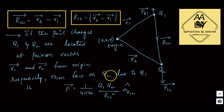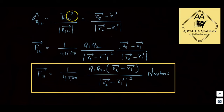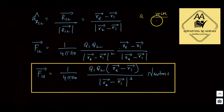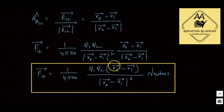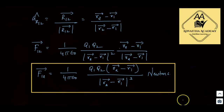So the force formula becomes: F12-bar = [1/(4πε₀)] · q1·q2 · (r2-bar − r1-bar) / |r2-bar − r1-bar|³, in newtons. This is the general formula for two-point charges. For n-point charges, we apply the superposition principle.